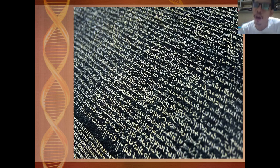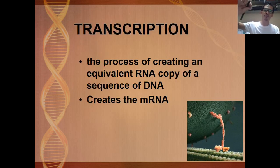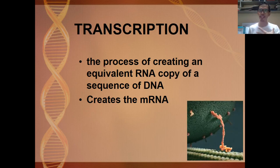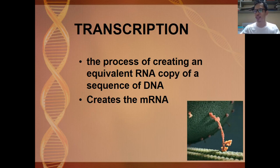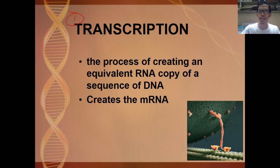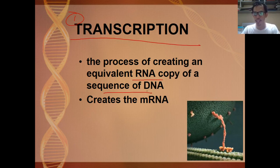The first process of protein synthesis is called transcription. In this picture, you can see the Rosetta Stone — only expert Egyptologists can translate it, and once translated, you can decipher its meaning. Similarly, transcription is the process of creating an RNA copy of the sequence of the DNA — it creates the mRNA version.